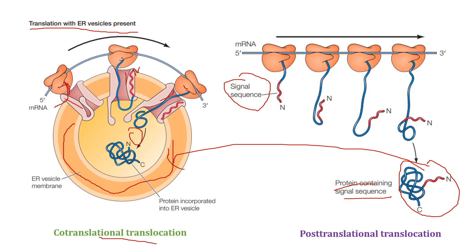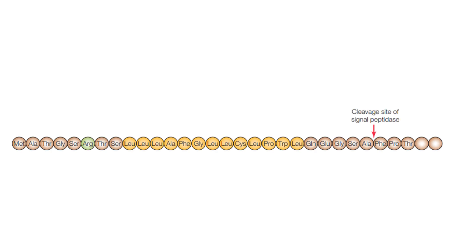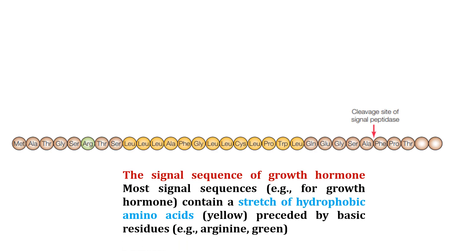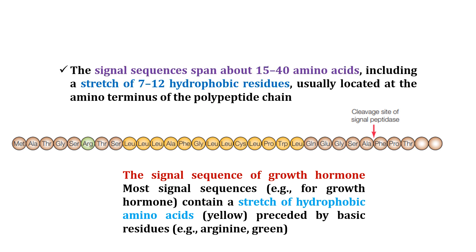Now let's understand the signal sequence using growth hormone as an example. The signal sequence spans about 15 to 40 amino acids, including a stretch of 7 to 12 hydrophobic residues. There is a cleavage site for signal peptidase, which cleaves and removes the signal sequence from within the ER lumen. For growth hormone, the hydrophobic amino acids shown in yellow are preceded by basic residues — specifically arginine.